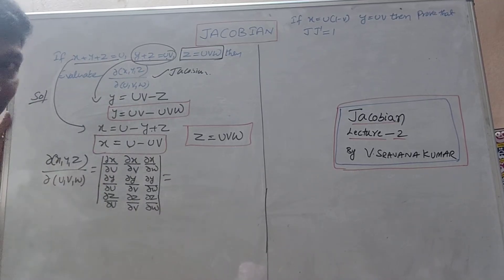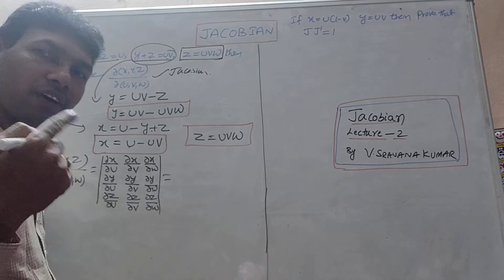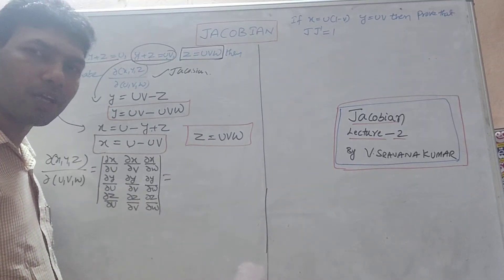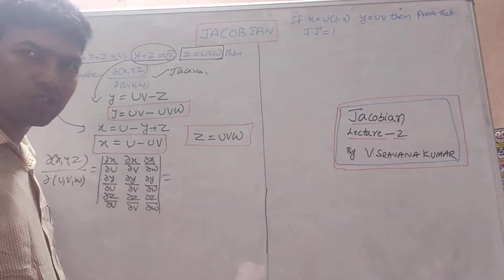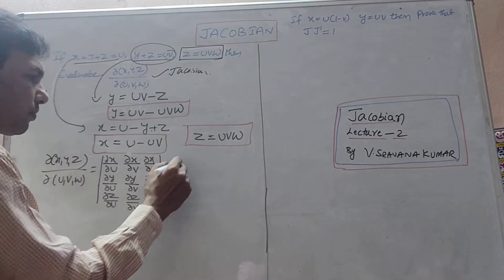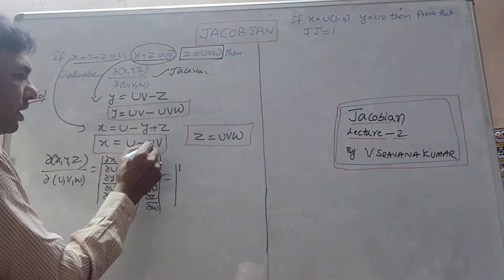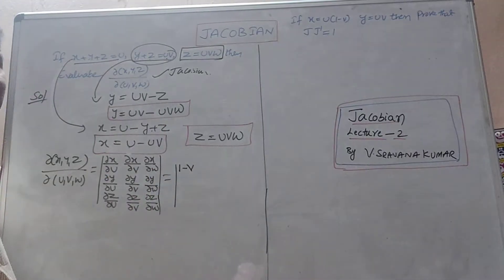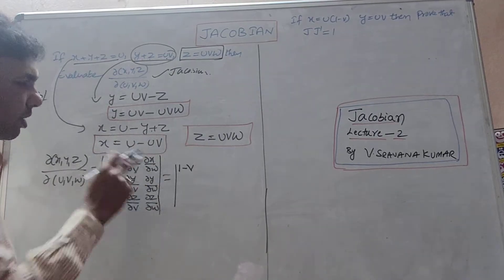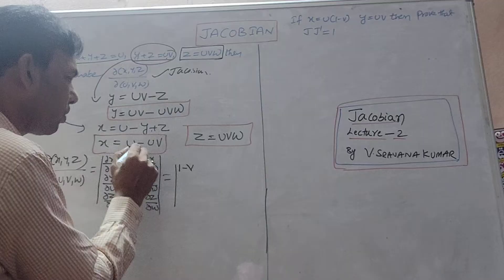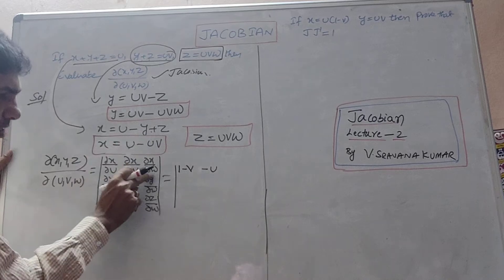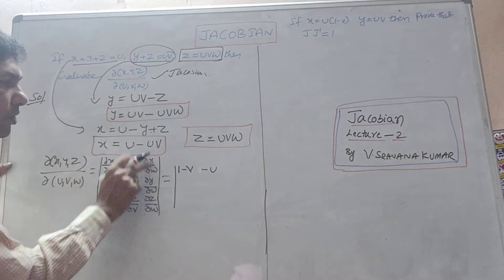Differentiating x with respect to u: x equals u minus uv, so ∂x/∂u equals 1 minus v. Differentiating x with respect to v: the first term has no v, so ∂x/∂v equals minus u. Differentiating x with respect to w: w does not appear in x, so ∂x/∂w equals 0.